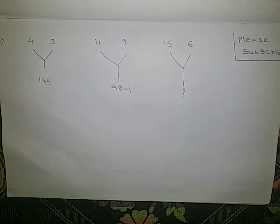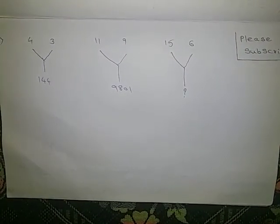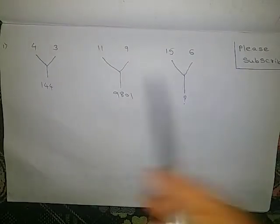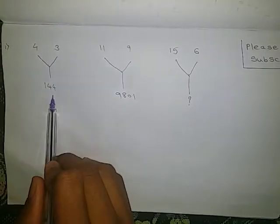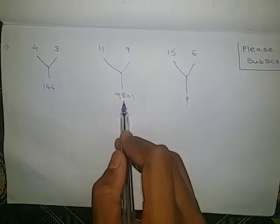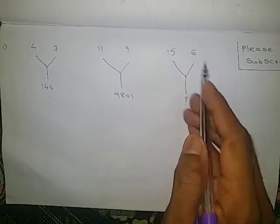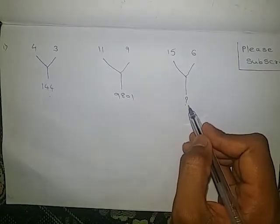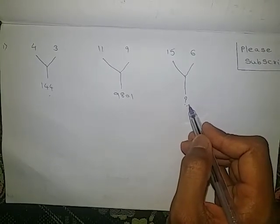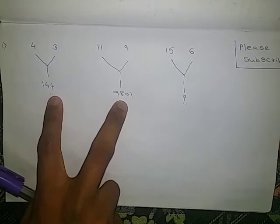Hello everyone. Today we are going to learn missing numbers. So here 4, 3, 144 is given. 11, 9, 9801 is given. 15, 6 is given. We need to find out this missing number. The logic we need to find from these two given solutions.